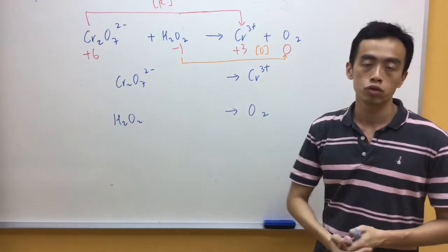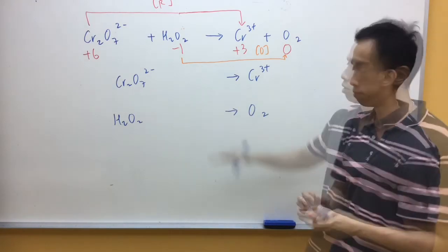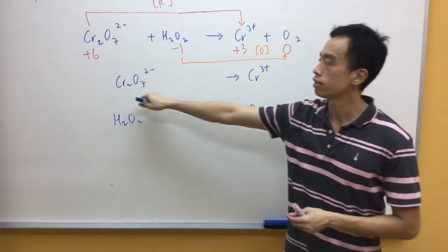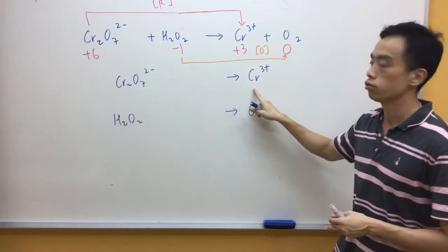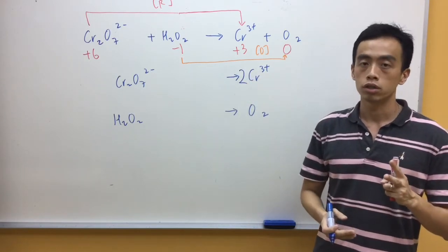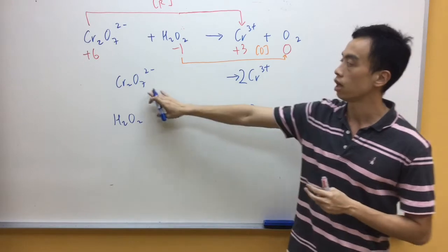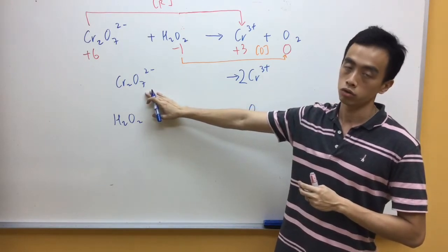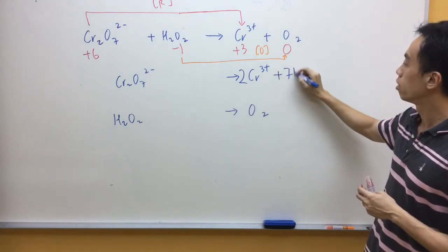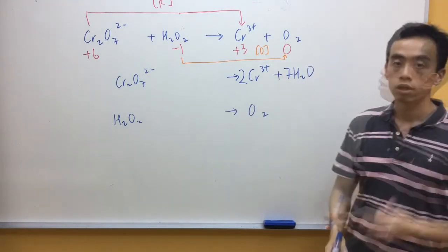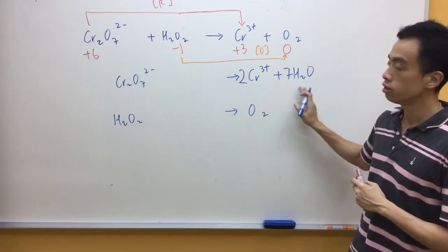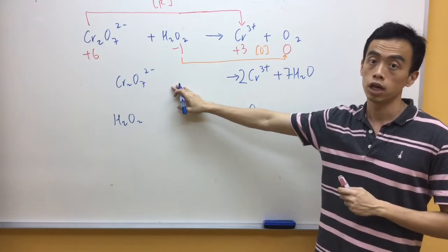Now in this case we assume that the reaction occurs in acidic medium. So for our first half equation, I'm balancing my Chromium. Left hand side I have 2 Chromium, right hand side I also need to have 2 Chromium. Second step is to balance oxygen using water. Left hand side I have 7 oxygen, so right hand side I also need to have 7 oxygen. Third step is to balance hydrogen using H+. Right hand side I have 14 hydrogen, so left hand side I need to have 14 H+.